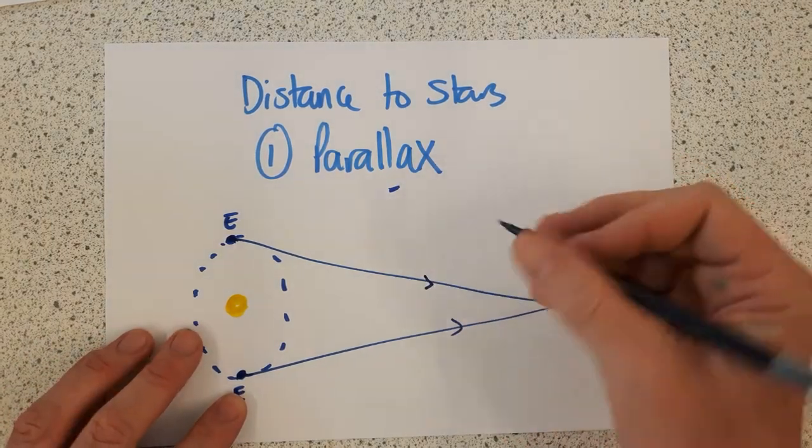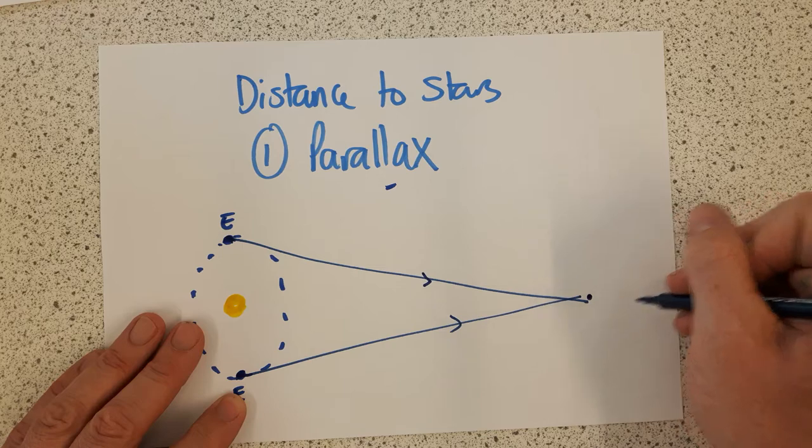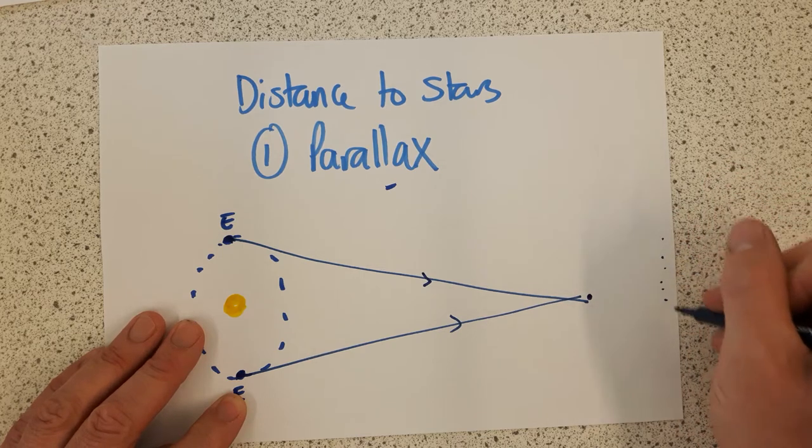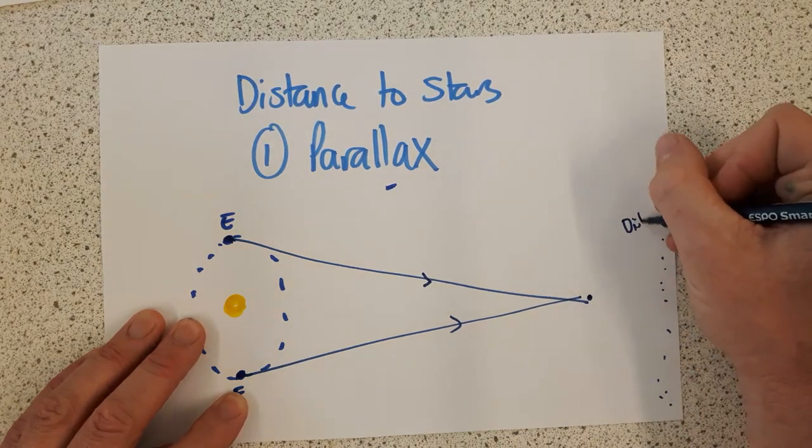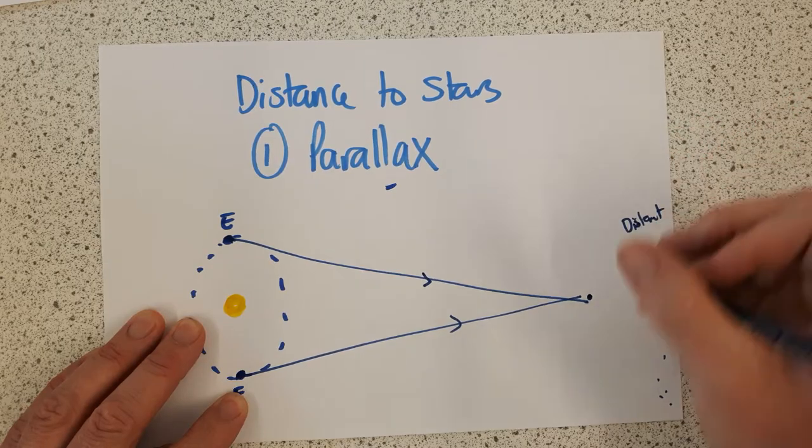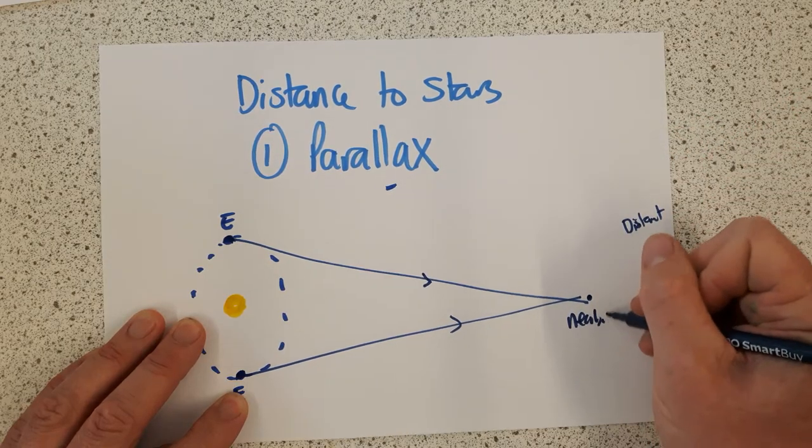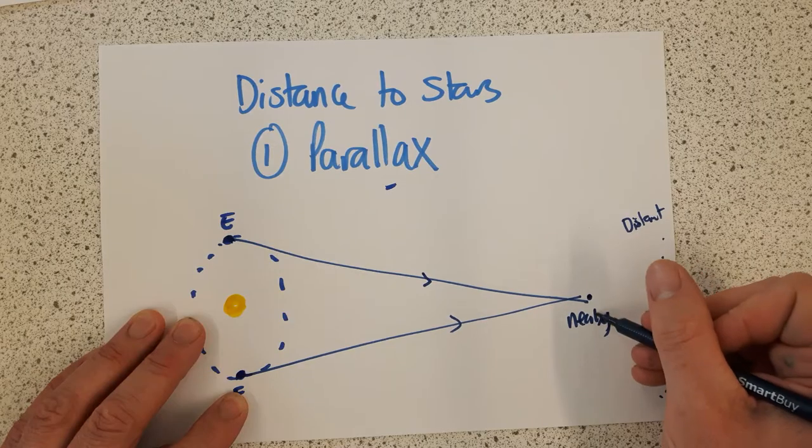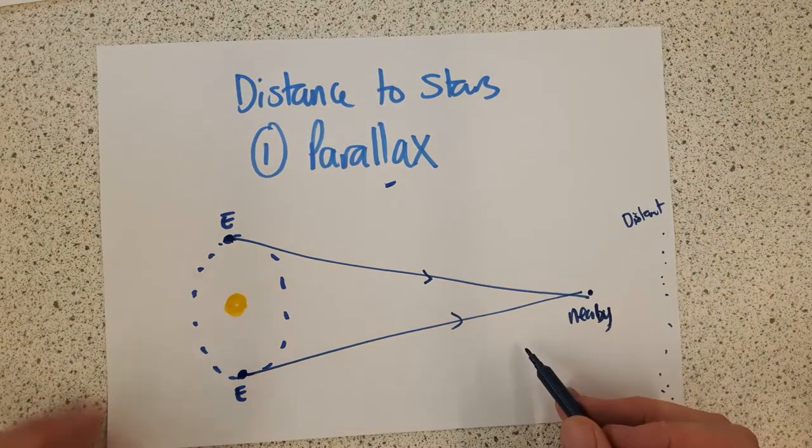The star appears to move in the sky against the background of what we call the distant stars. These are the way distant stars. This nearby star will appear to move in the night sky compared to the distant stars.